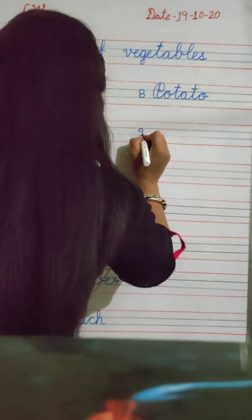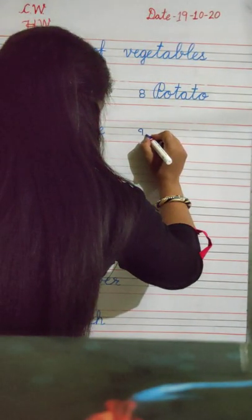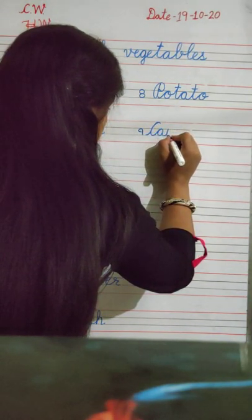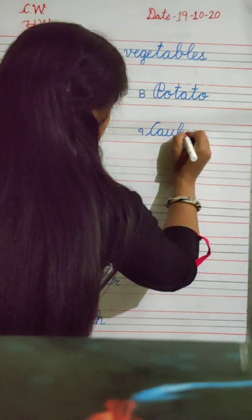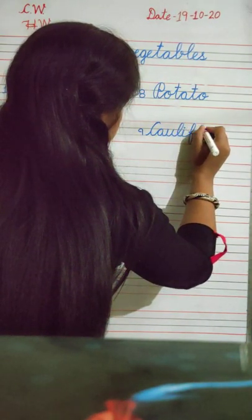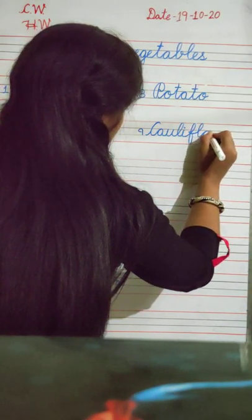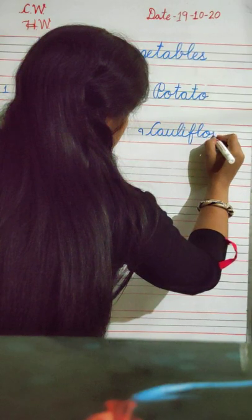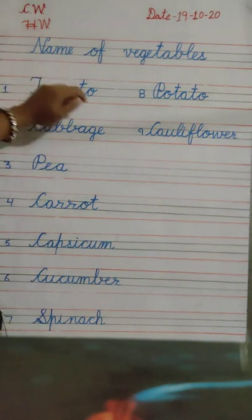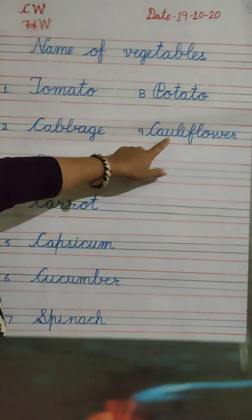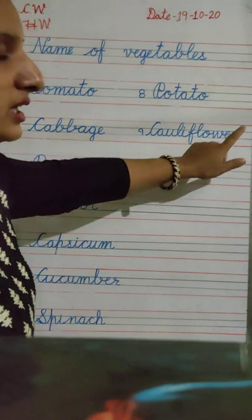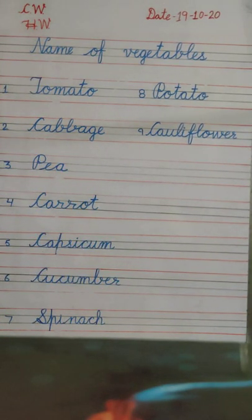Number 9. C, A, U, L, I, F, L, O, W, E, R. Cauliflower. C, A, U, L, I, F, L, O, W, E, R. Cauliflower. Next.